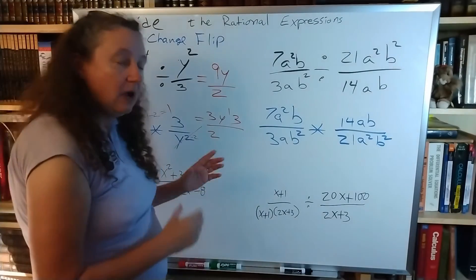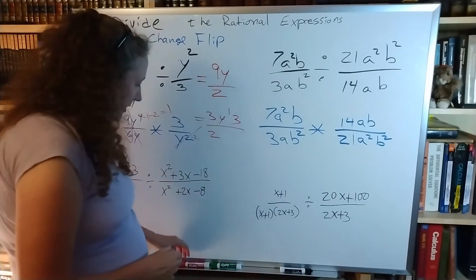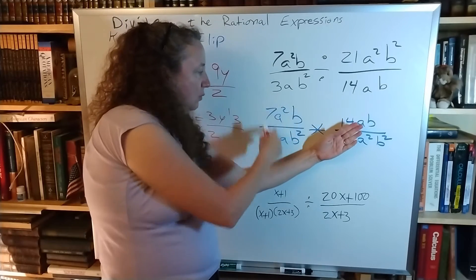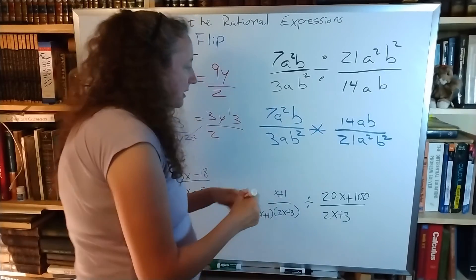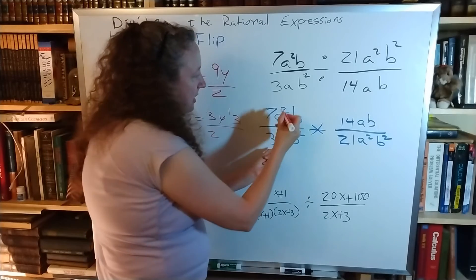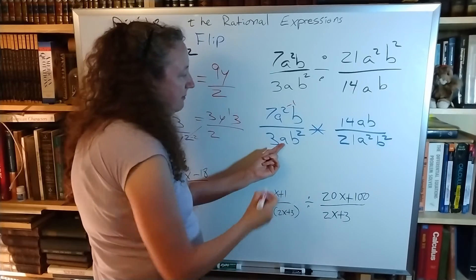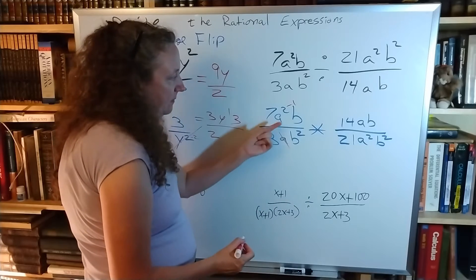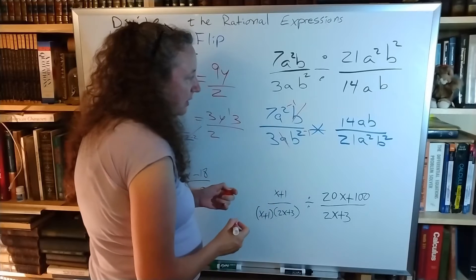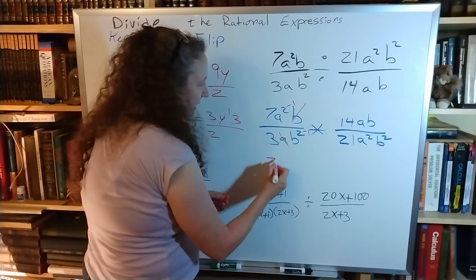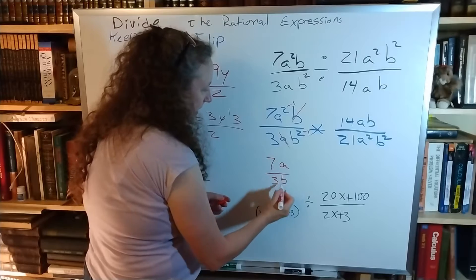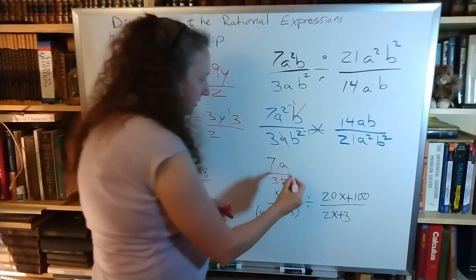Now that I have that done, now I can start reducing. So I'm going to look at the first fraction only and see what I can reduce. The 7 and 3 can't do anything. For a, I can subtract that understood 1 — canceling it out there and canceling the other one. So I have 7a over 3b times...